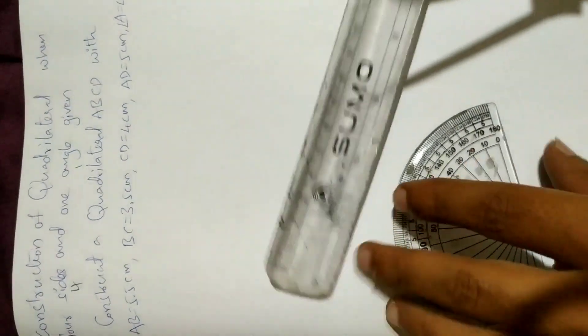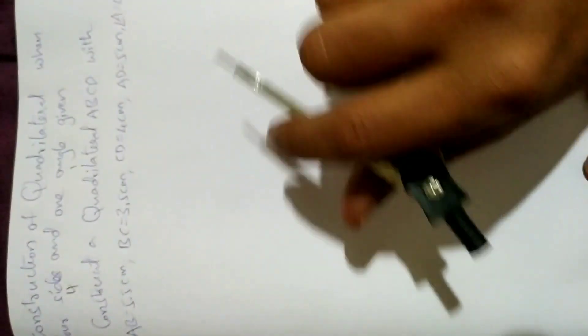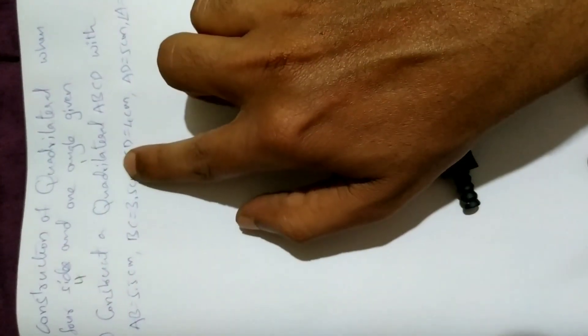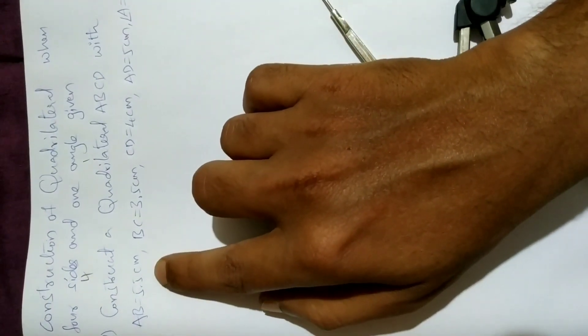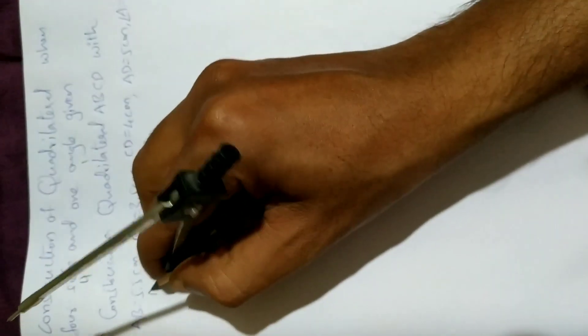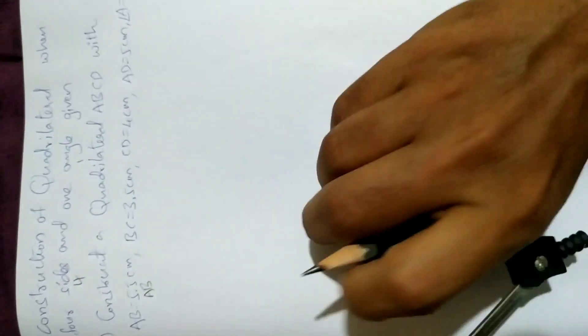First of all, the question is: construct a quadrilateral ABCD with AB equal to 5.5 centimeters, BC equal to 3.5 centimeters,